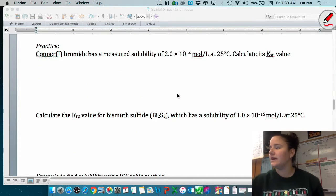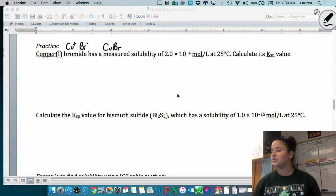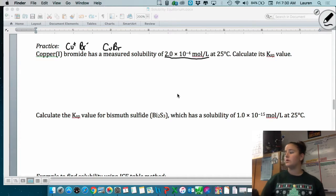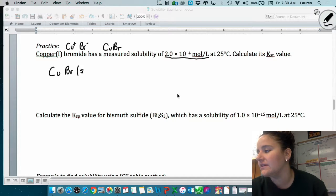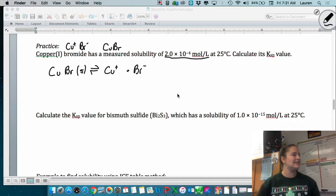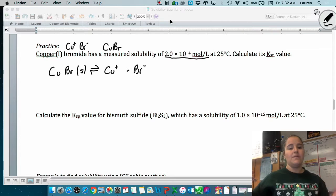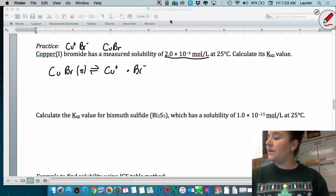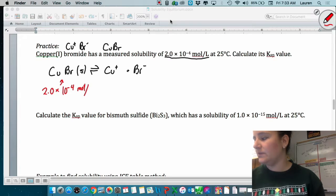Copper 1 bromide. So we got copper 1, so Cu+. Bromide is Br-. So the formula of copper bromide is CuBr. It has a measured solubility of 2.0 times 10 to the negative 4 moles per liter at 25 degrees Celsius. And we're going to calculate its Ksp value. So we're looking at the copper bromide, which is a solid and it's dissolving into copper+ ions and bromine- ions. So we know that it dissolves into its ions. And we know that 2.0 times 10 to the negative 4 moles per liter will dissolve.